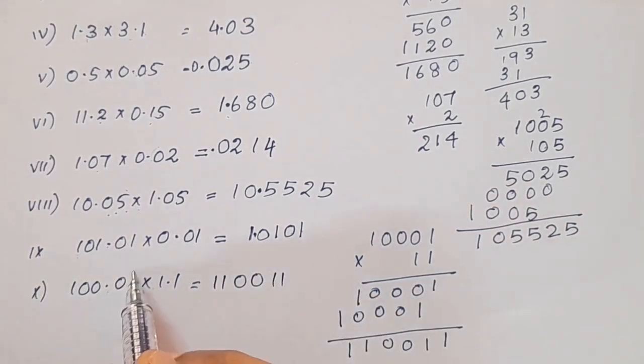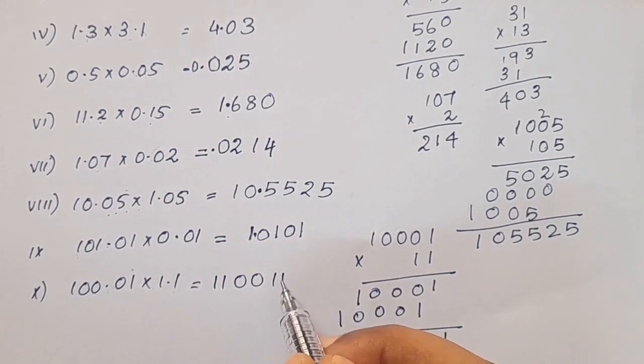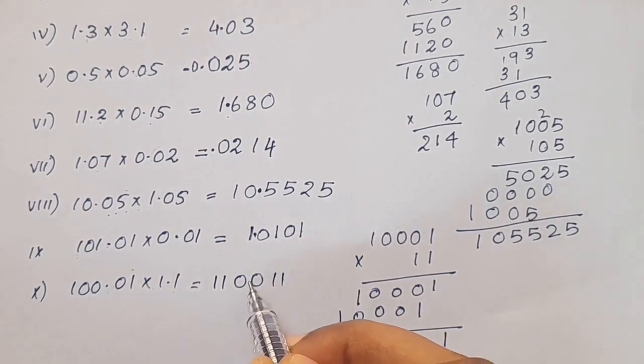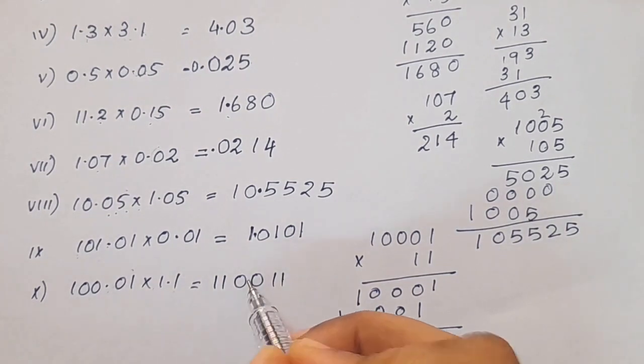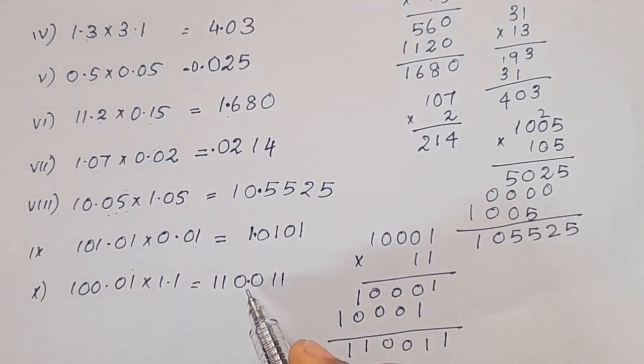We write the decimal point: 2 plus 2 = 4 digits total. The answer is 0.0856.